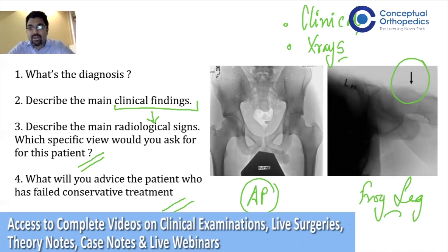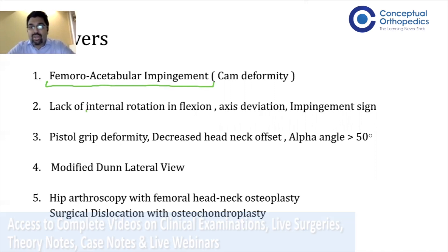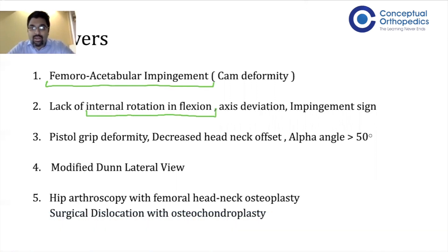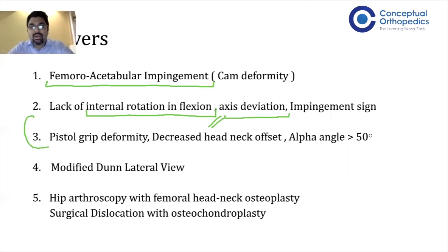The next question is: what are the main clinical findings? If you examine a patient with femoral acetabular impingement, the main clinical sign is lack of internal rotation in flexion. The patient will also have pain in this position, which is called the positive anterior impingement sign. When you flex the hip beyond 90 degrees, the hip goes into external rotation — axial deviation. The impingement sign is reproduction of the same pain on flexion and internal rotation. These are the typical clinical findings of FAI.